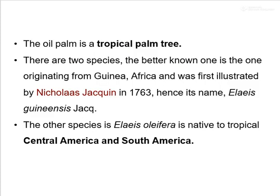The oil palm is a tropical palm tree. There are two species better known. One originated from Guinea, Africa, and was first illustrated by Nicholas Jacquin in 1763, hence its name Elaeis guineensis. The other species, Elaeis oleifera, is native to tropical Central America and South America.